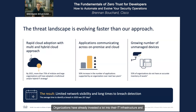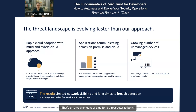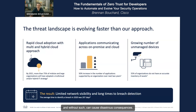Organizations have already invested a lot into their IT infrastructure and security, yet threats still continue to find their way through. When those threats do get through, it takes months, even years to detect them. In 2020, the average time to detect a breach was 207 days — an unreal amount of time for a threat actor to be in an organization's systems causing chaos. Security teams are strapped with disjointed tools, limited manpower, and a lack of visibility, integration, and collaboration, which can cause disastrous consequences.